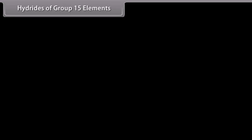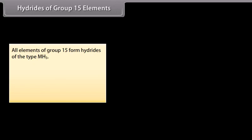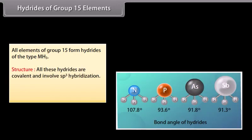Hydrides of group 15 elements: All elements of group 15 form hydrides of the type MH3. All these hydrides are covalent and involve sp3 hybridisation. Three of the four sp3 hybrid orbitals overlap with 1s orbitals of 3 hydrogen atoms to form 3 M–H sigma bonds, while the fourth hybrid orbital contains a lone pair of electrons. The bond angle decreases down the group.